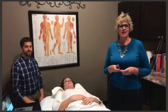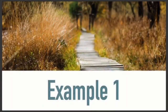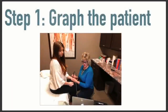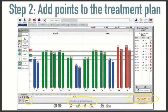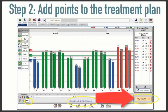I am here today to teach you about ion pumping cords. We've had a lot of questions, and I thought that if I did a demo for you, you would be able to see how they work. What you need to do first is graph your patient, and after you've graphed your patient you can add points to the treatment plan. If you notice, in the far right corner of your treatment strategies, if you click on the divergent channel treatment, all of the points at the bottom will be added to the treatment plan and you will see them on your screen.